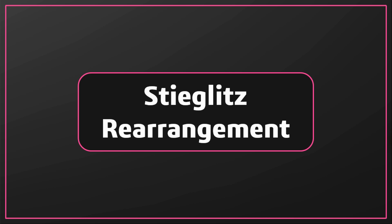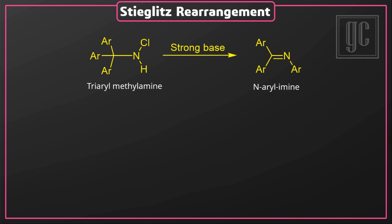In this video we are going to discuss Stieglitz rearrangement. Stieglitz rearrangement is the rearrangement of derivatives of triarylmethylamines in the presence of a strong base. Nitrene formation takes place, followed by a concerted mechanism, and a rearranged product — diarylmethylamine — is formed. The driving force for this rearrangement is to form a more stable rearranged product.